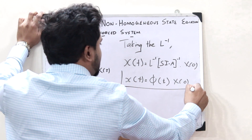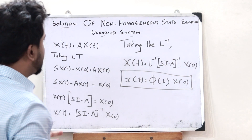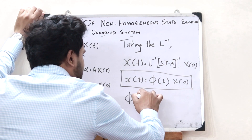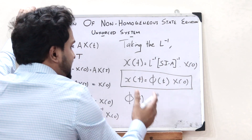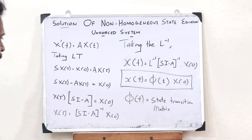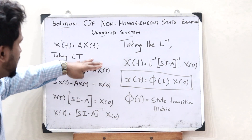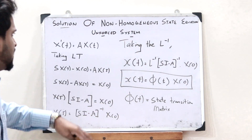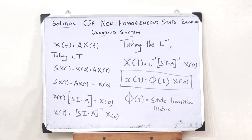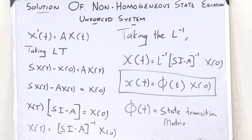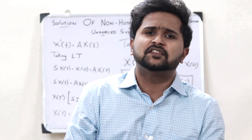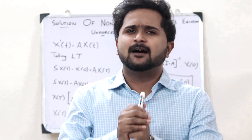This is the solution of a non-homogeneous state equation in the case of an unforced system, where φ(t) is said to be the state transition matrix. We will be discussing much more in depth on what the state transition matrix is in the upcoming videos.